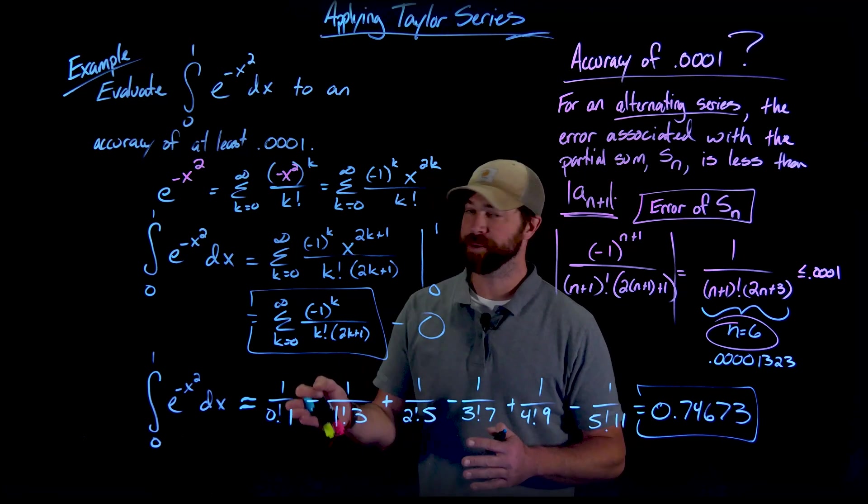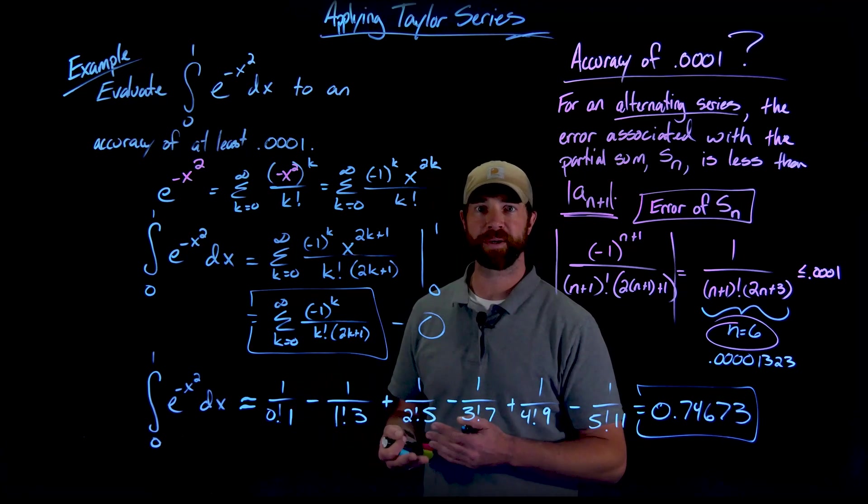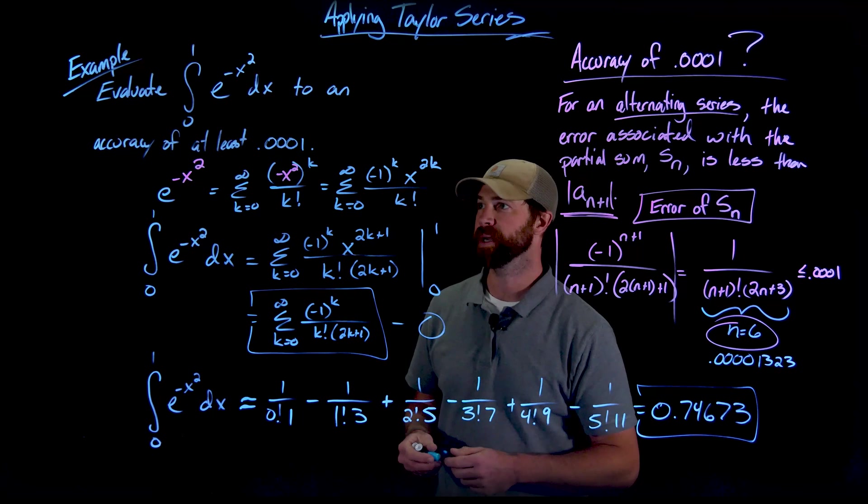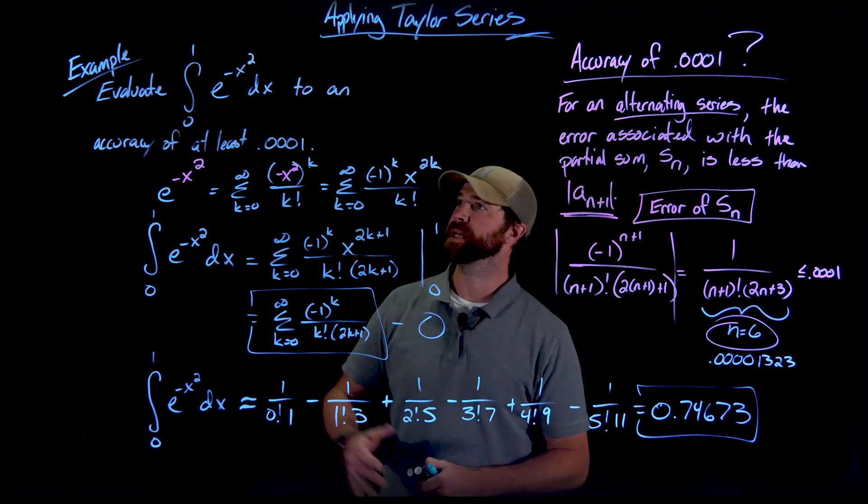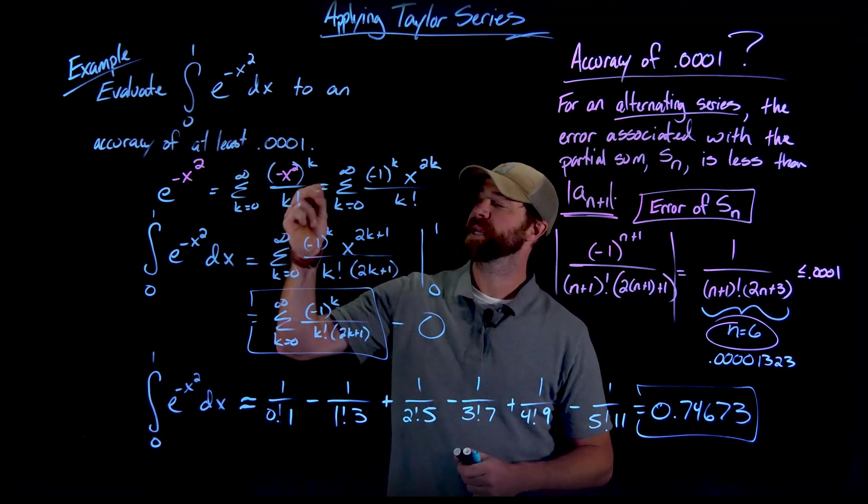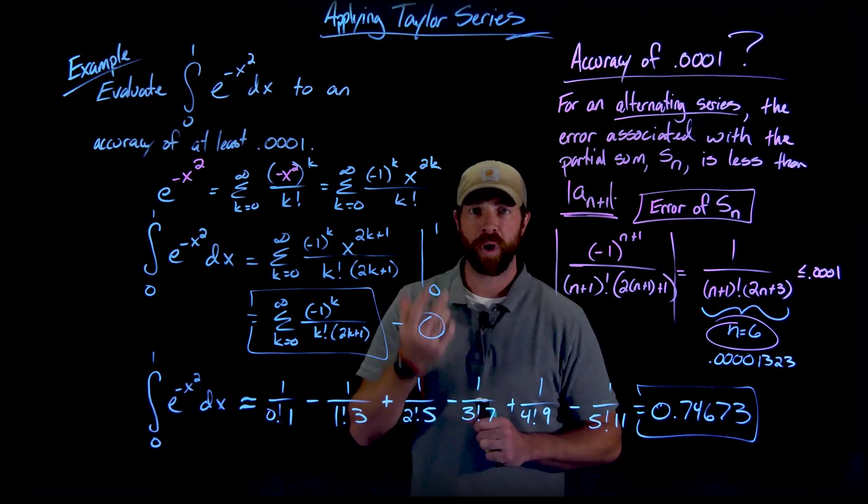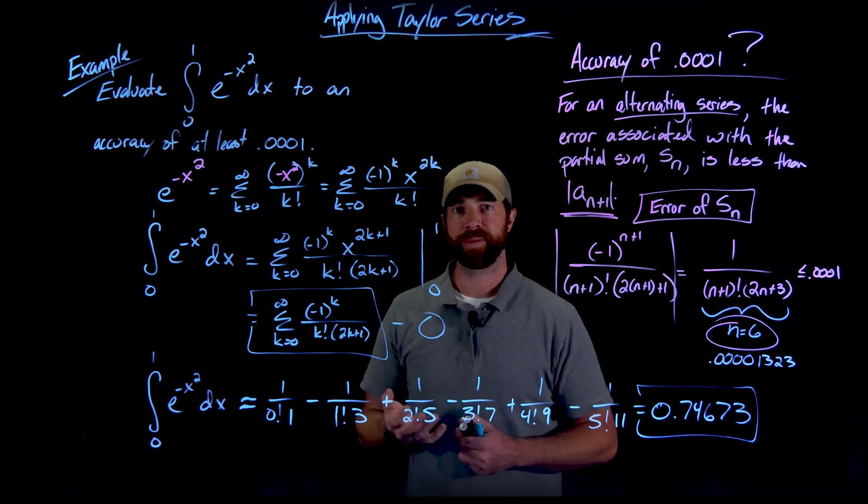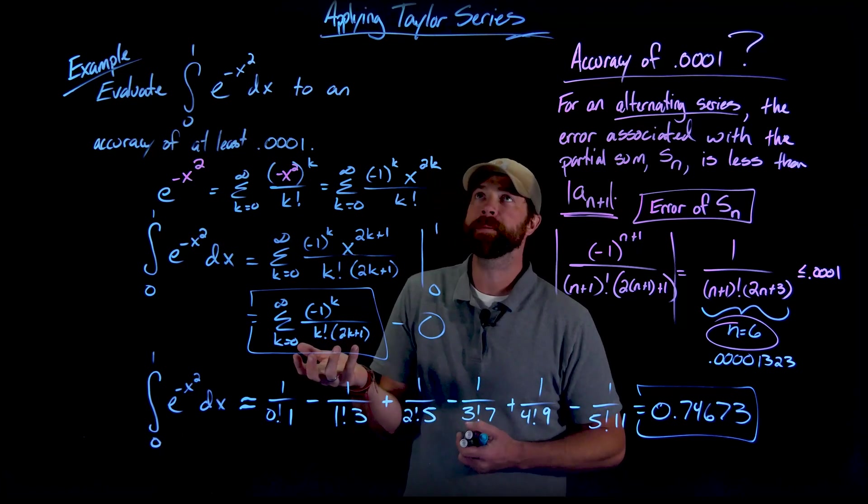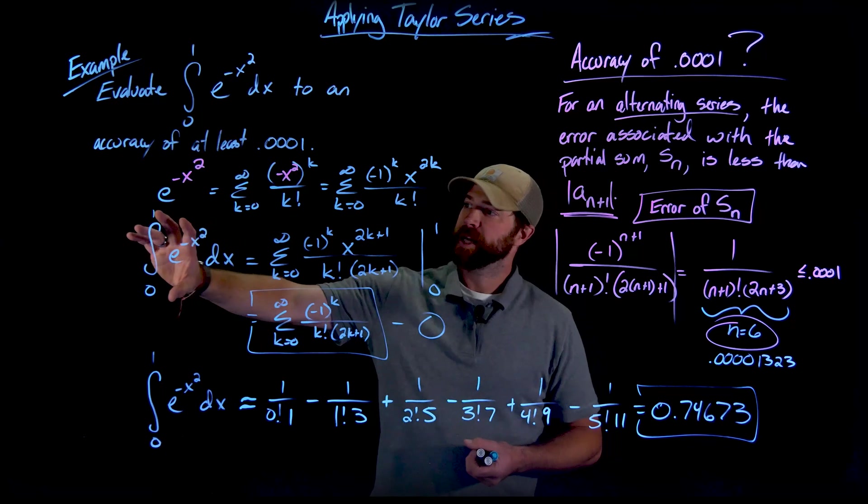But this, again, without having an elementary integral, indefinite integral for e to the negative x squared, what I was able to do is rewrite this function right here with a Taylor series representation. It was important, and this will always be important, that my representation I'm using is on the interval or the values that I'm using for this definite integral.